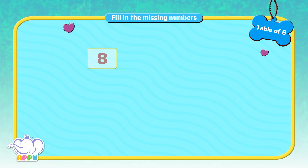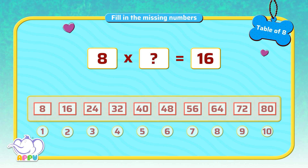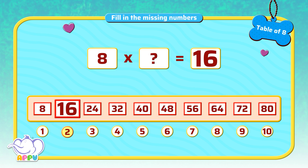8 multiplied by a number is 16. What is the missing number? The missing number is 2, because we have to skip count by 8 twice to get 16.